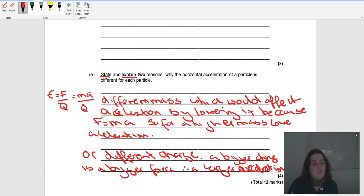A different charge, a bigger charge is a bigger force and bigger acceleration. I'm stating the two reasons why they might be different: different mass or different charge. And explaining the effect on the horizontal. A different mass would lower it because F equals MA. A different charge, bigger charge means bigger force, therefore larger acceleration.